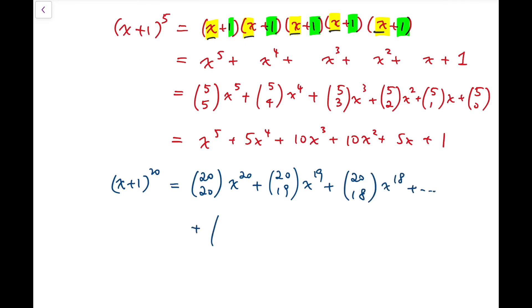Adding all the way down to 20 choose 2 x squared plus 20 choose 1 times x plus 20 choose 0 times 1, which is that number itself.